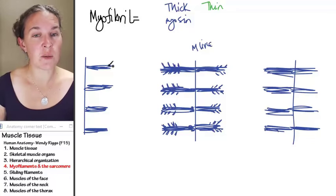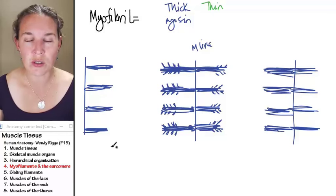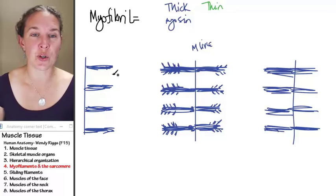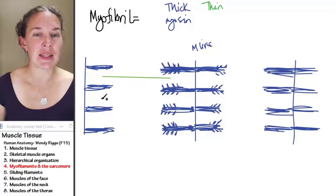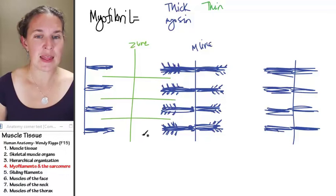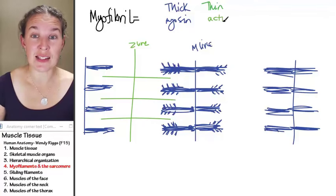Are thick filaments the only filaments in a myofibril? No, we also have thin filaments. This is what gets super cool. Thin filaments span the middle and attach at a line called the Z line. Thin filaments are mostly actin protein.